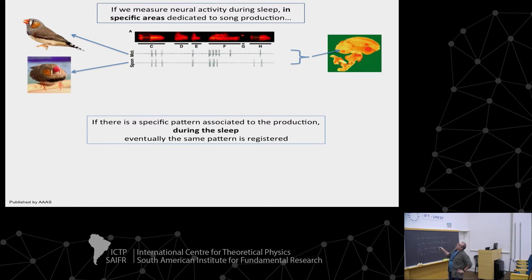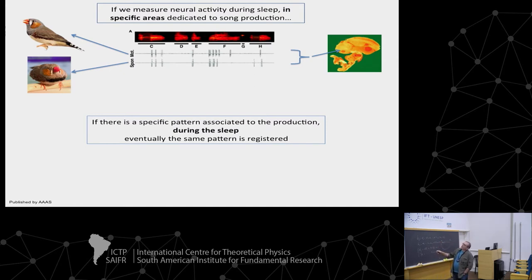Recordings in this region — the robustus nucleus of the archistratum, part of the telencephalon — this is the one I was showing you before. The measurements from HVC I was showing before; in this case, this is RA. The idea is that if there is a specific pattern associated with sound production during sleep, you eventually see the same pattern of activity.